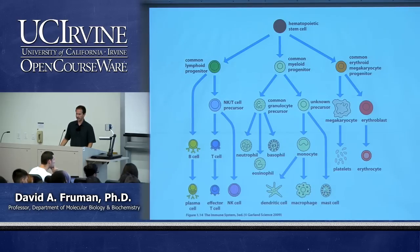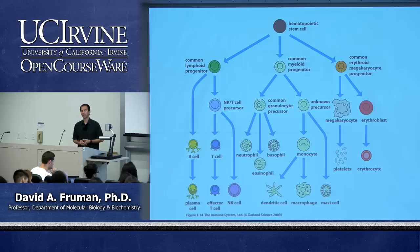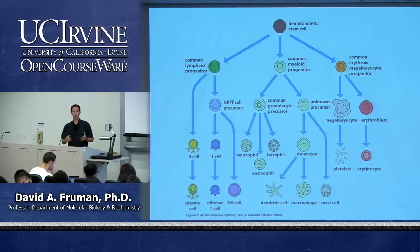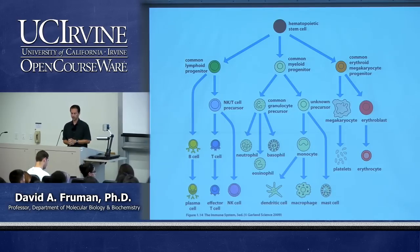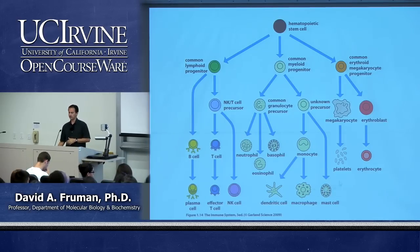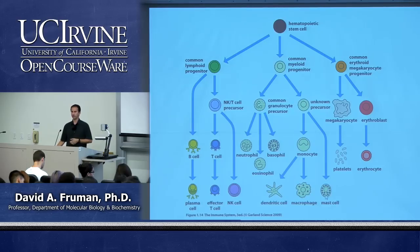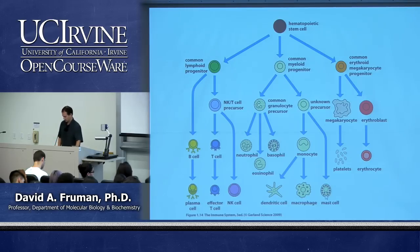The mast cell is a major cell type involved in allergy. An allergy is a response to an allergen — a non-harmful antigen that your immune system nevertheless sees as foreign and generates a response that can cause nuisance or even dangerous conditions. Mast cells mediate these responses by releasing granule contents including histamine, which you counteract when you take antihistamines for an allergic reaction.